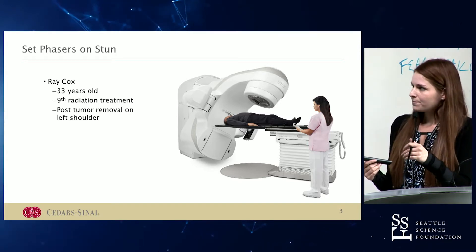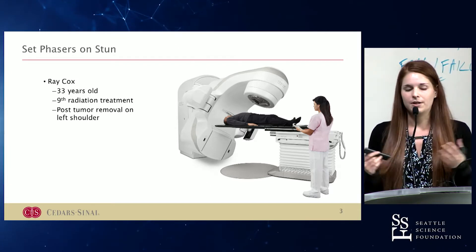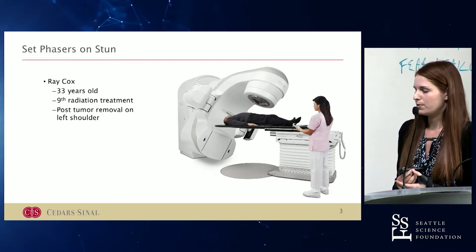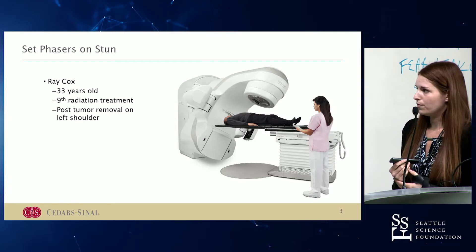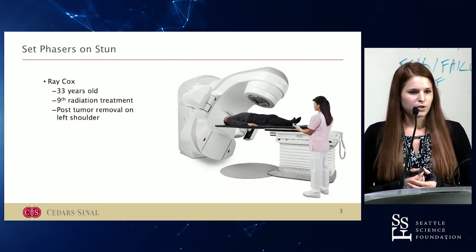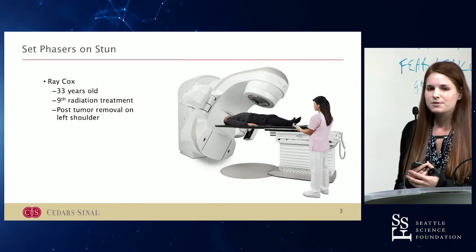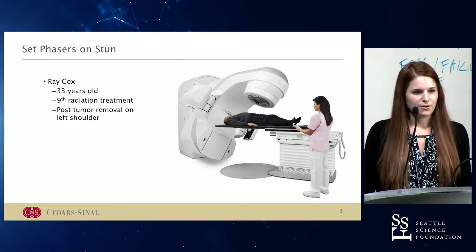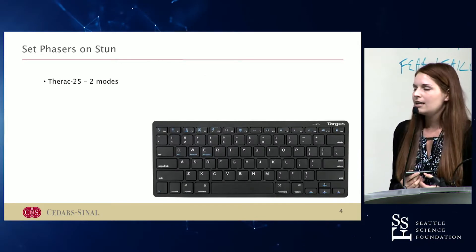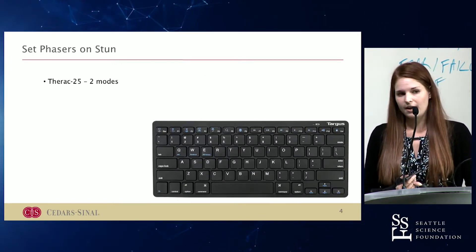There's a patient named Ray Cox. He's 33 years old. He was going to get his ninth radiation treatment on his shoulder post-tumor removal. He was really familiar with this procedure — familiar with the radiology technician he'd worked with several times. This was a typical, normal day for him. He gets this procedure done using a machine called the Therac-25.